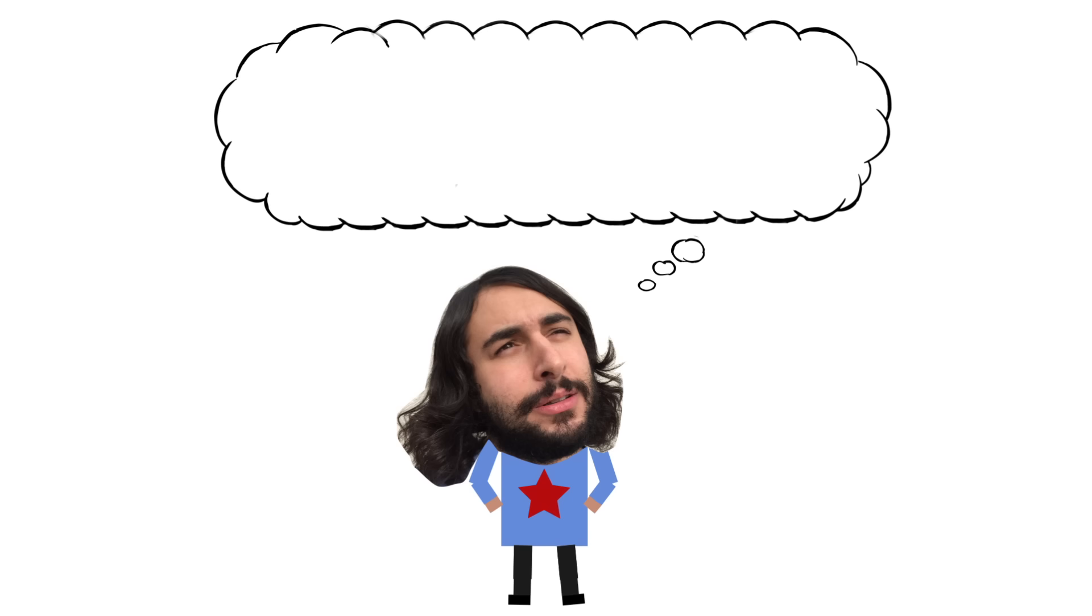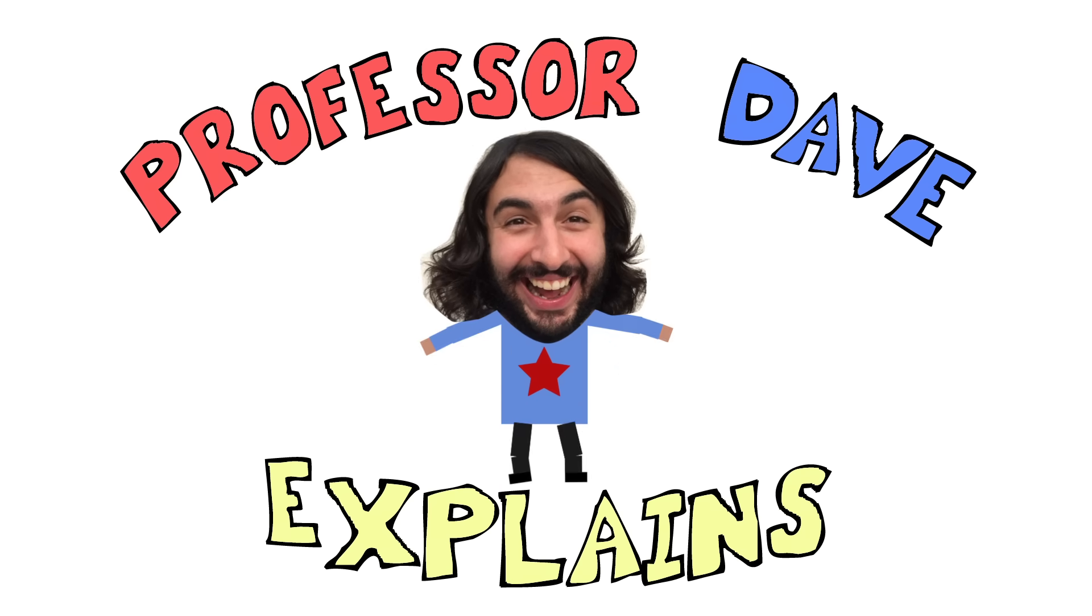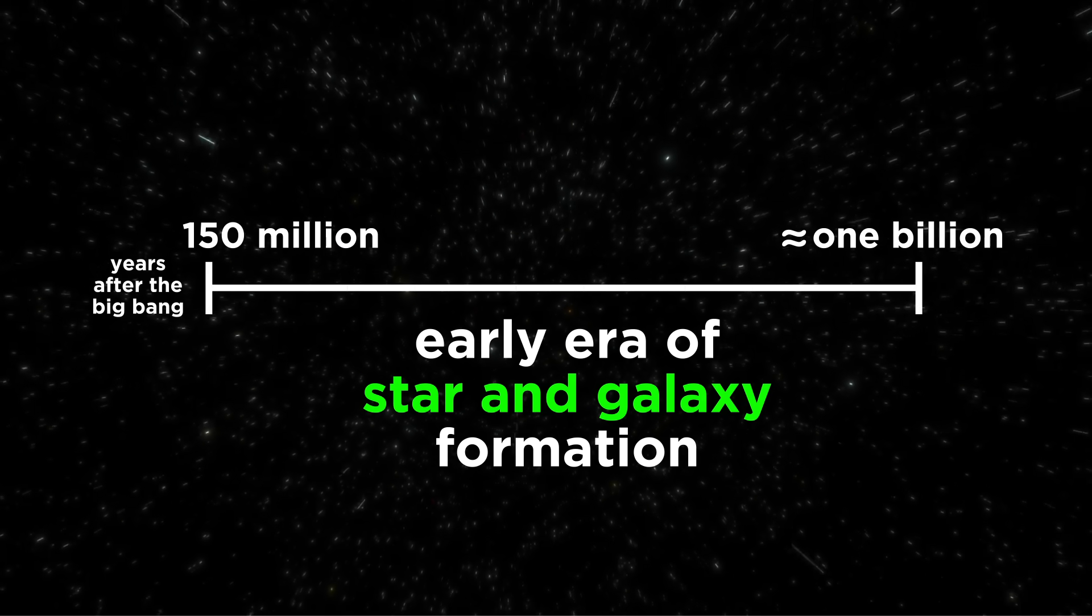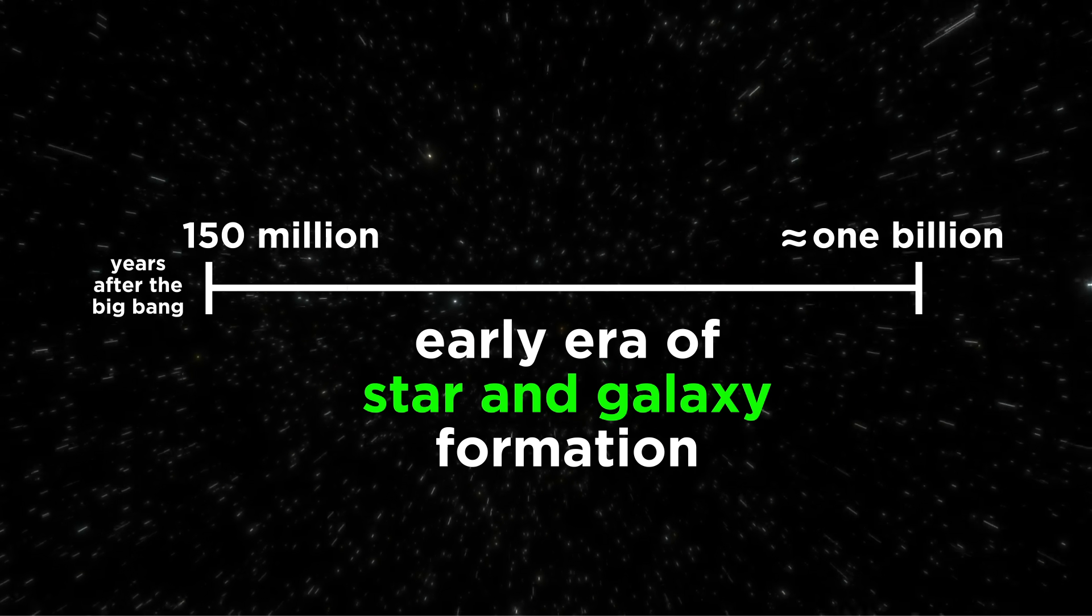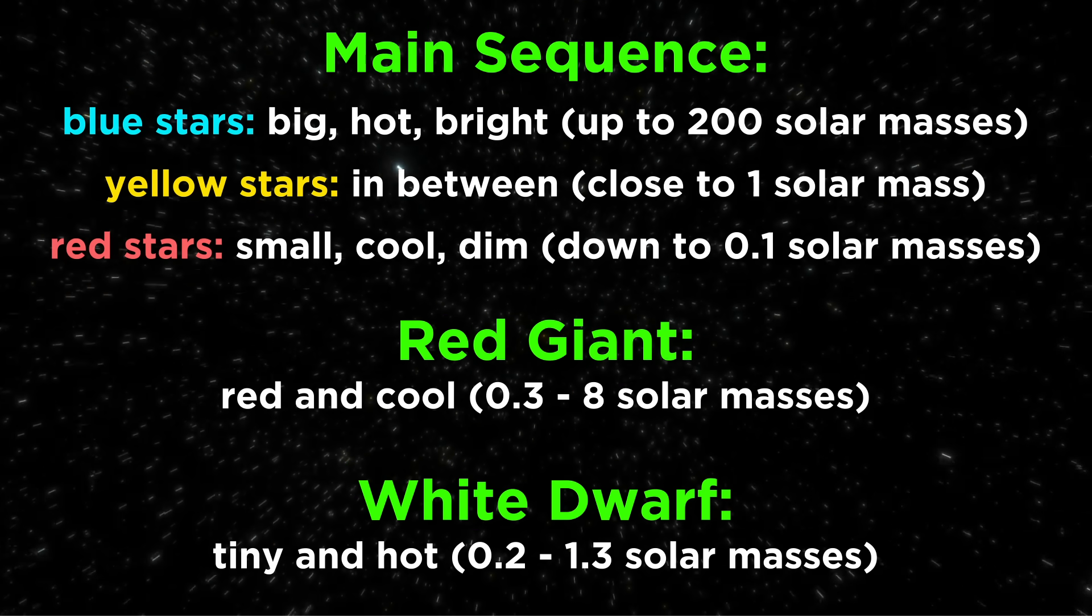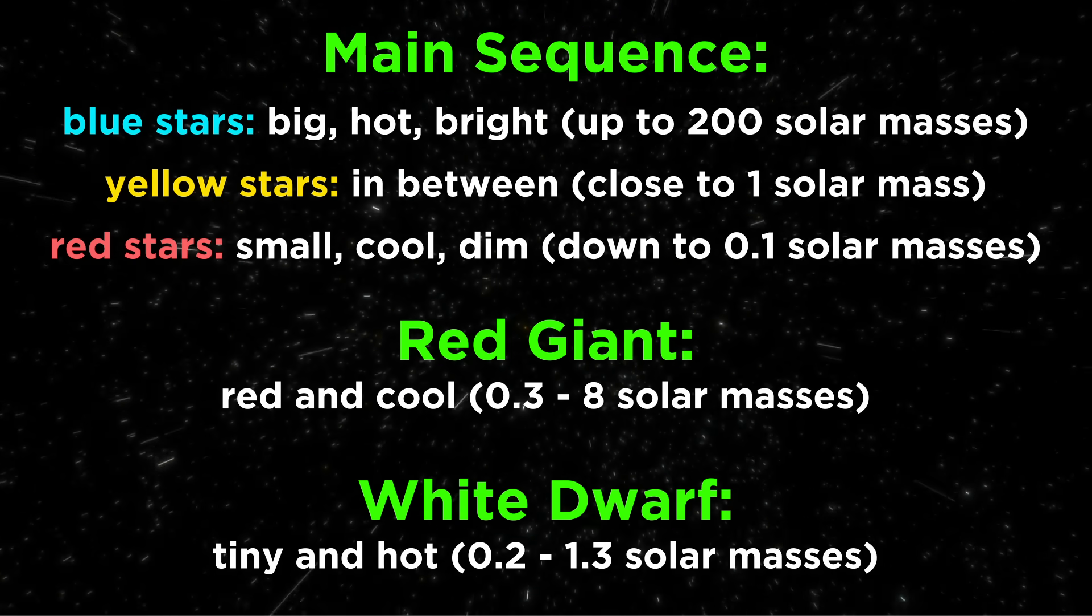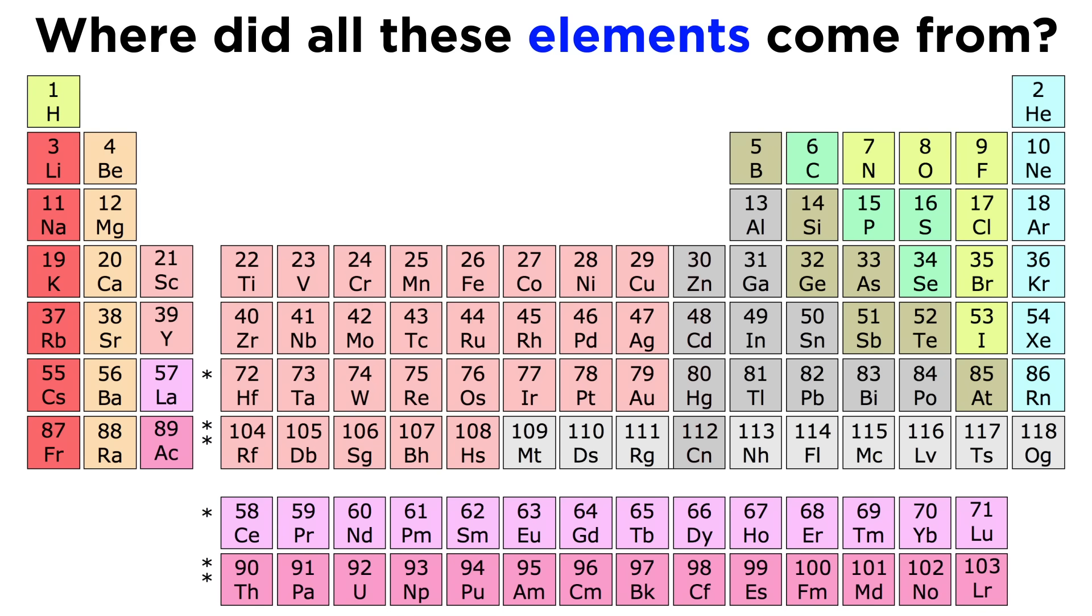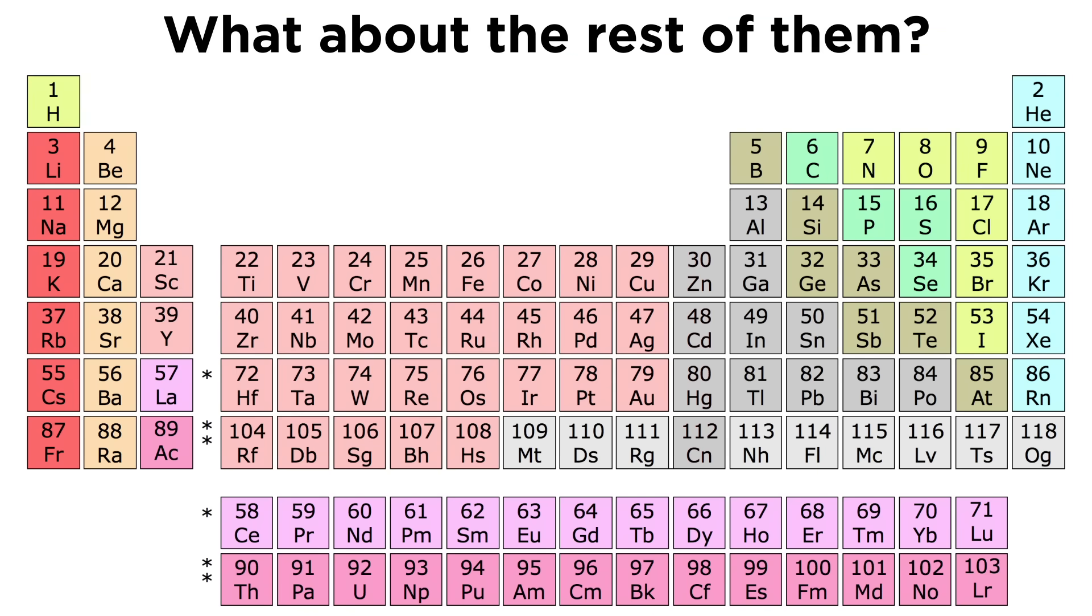Professor Dave again, let's kill some stars. We've learned about what happened for the first billion years or so in the history of the universe, which leaves us with lots of stars and galaxies, and we are now equipped with the terminology needed to describe and categorize these stars. But we still haven't talked about all the other elements on the periodic table. We've only mentioned hydrogen and helium so far. So where did the rest come from?